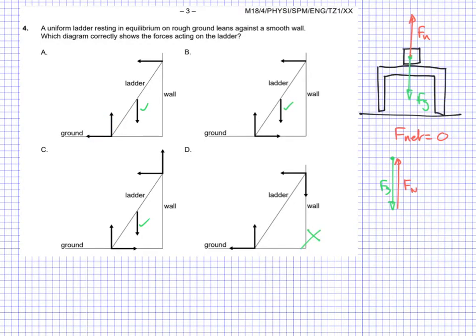Which diagram has an arrow equal and opposite to the downward gravity arrow? All four options have one on the ground. But one diagram also has an upward arrow coming from the wall, implying the wall-ladder interaction produces an upward force. However, the question says it's a smooth wall — meaning no friction — so that upward force from the wall is not possible. That eliminates C.